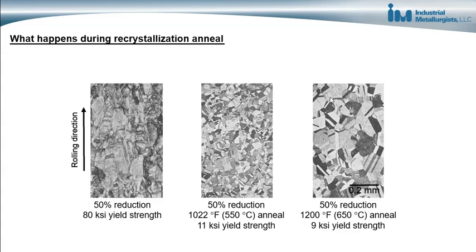In this slide, I'll explain what happens inside of a metal during a recrystallization anneal. The micrographs shown here are for a brass alloy — copper with 30% zinc. The sample on the left was cold worked, reduced in thickness by 50%, and we can see the grains are elongated in the rolling direction. This metal had a strength of 80 KSI, due to the increase in dislocations introduced during cold working.